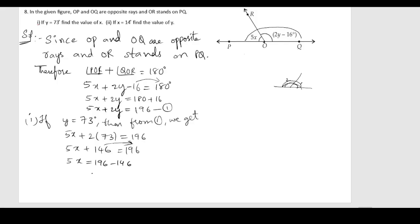Sending 146 to the other side: 5x equals 196 minus 146, which gives 5x equals 50. Dividing both sides by 5, we get x equals 10. So for condition one, x equals 10.